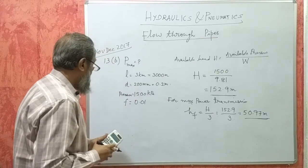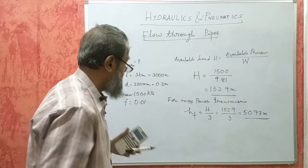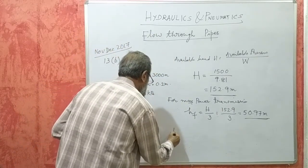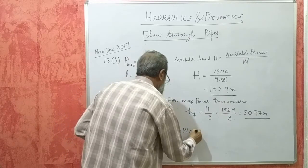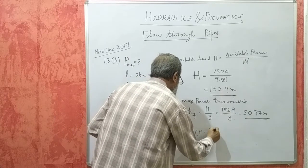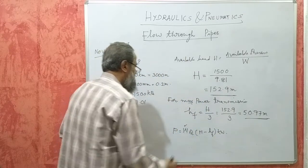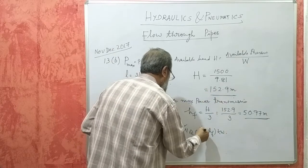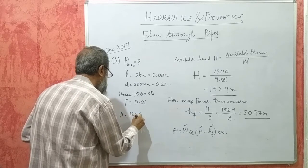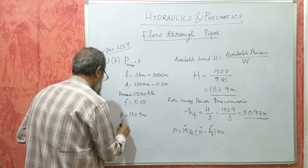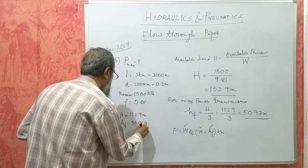Now I have L and D, and I have to find the maximum power. Power is equal to WQ into (H minus HF). I know W, H is 152.9 meters, and HF is 50.97 meters. But I don't have Q, so without Q I cannot get power. First I have to find the discharge.